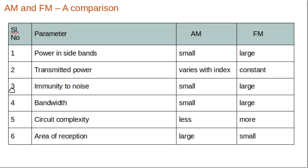Now we compare AM and FM. Regarding power in sidebands: in AM, a large portion of total power is in the carrier rather than sidebands; in FM, the maximum part of transmitted power is in the sidebands — an advantage of FM. Regarding total transmitter power: in AM it varies with modulation index, while in FM it remains constant.